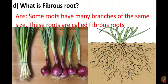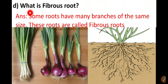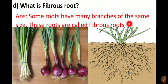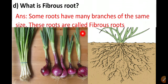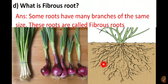Now look at the D question: what is fibrous root? The second type of roots are fibrous roots. The answer is some roots have many branches of the same size. These roots are called fibrous roots. Fibrous roots have many branches of the same size and these branches are very thin and weak, so they do not store much food.